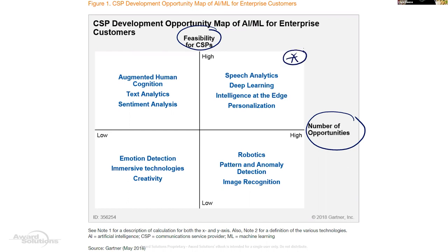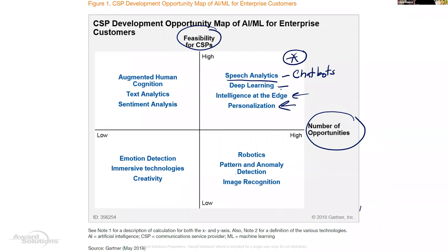The upper right-hand quadrant is really the most interesting one. Speech analytics — we'll look at that with respect to chatbots. Deep learning: most of the problems we're going to talk about are more complicated and will require deep learning rather than basic machine learning, but it's really the same thing. It's kind of like algebra versus calculus — calculus is just more complicated algebra. So think of algebra like machine learning and calculus like deep learning. Intelligence on the edge and personalization are also there.